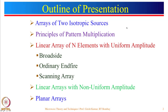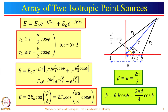Let us start with the outline of the presentation. I will start with arrays of 2 isotropic sources, then talk about the principle of pattern multiplication. After that I will cover linear arrays of N elements with uniform amplitude — taking 3 different cases: broadside radiation pattern, ordinary end-fire radiation pattern, and scanning array. After that we will discuss linear arrays with non-uniform amplitude, followed by planar arrays.